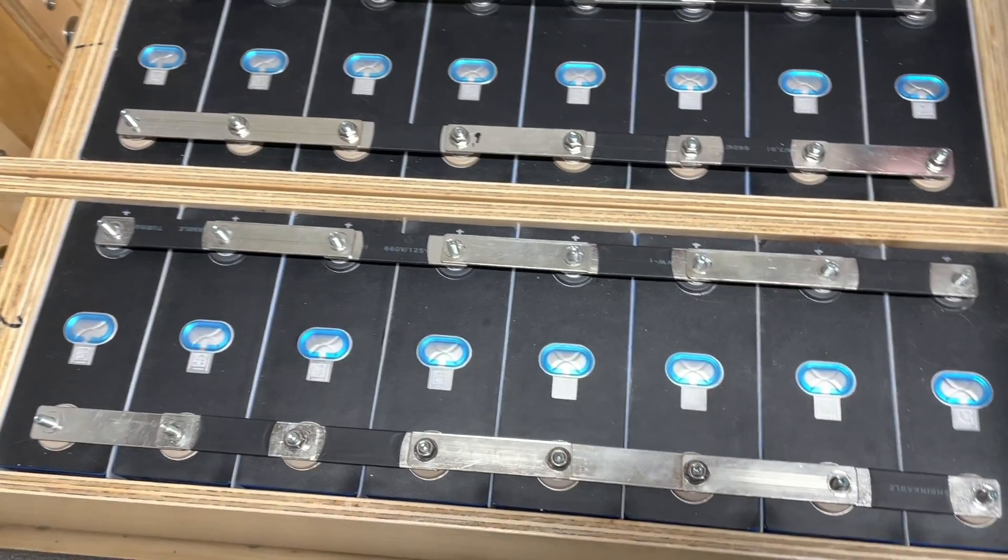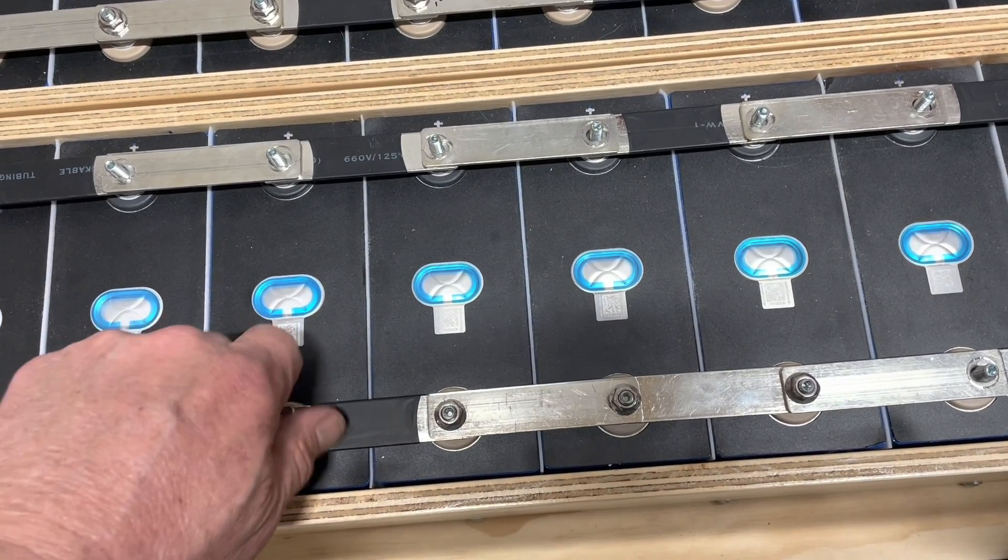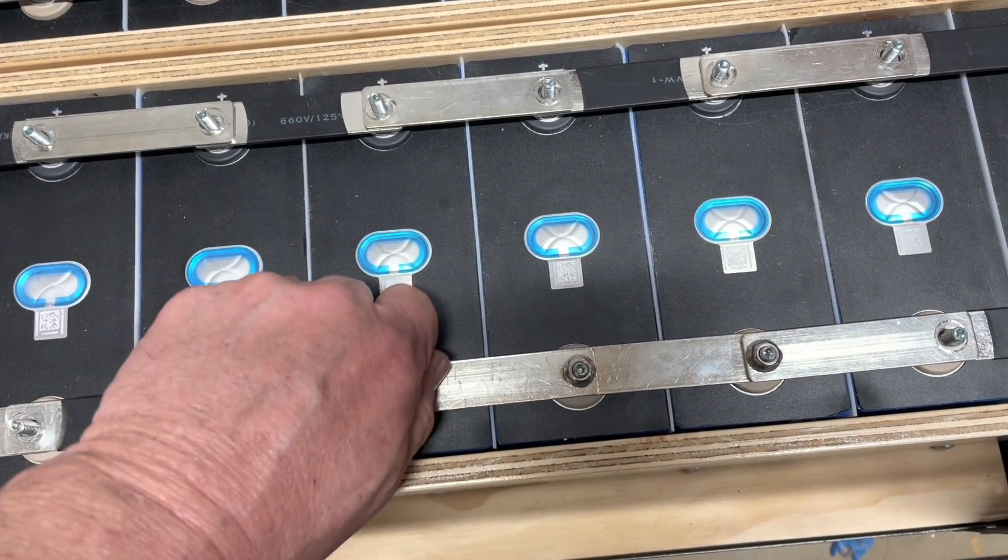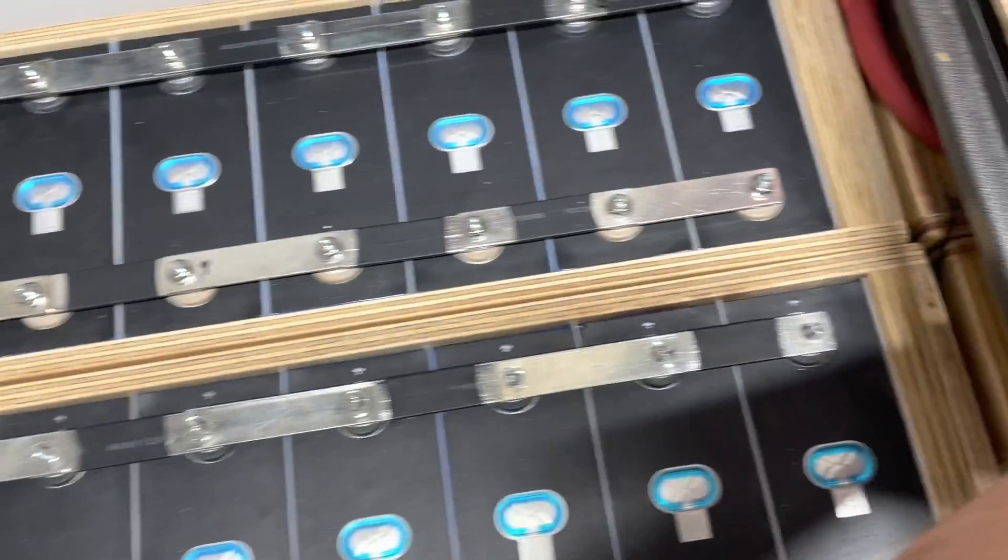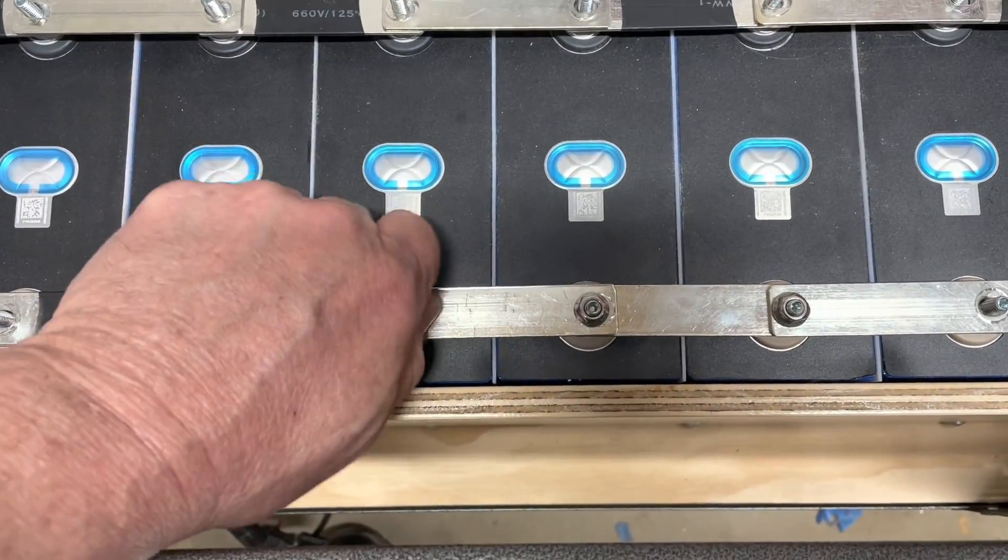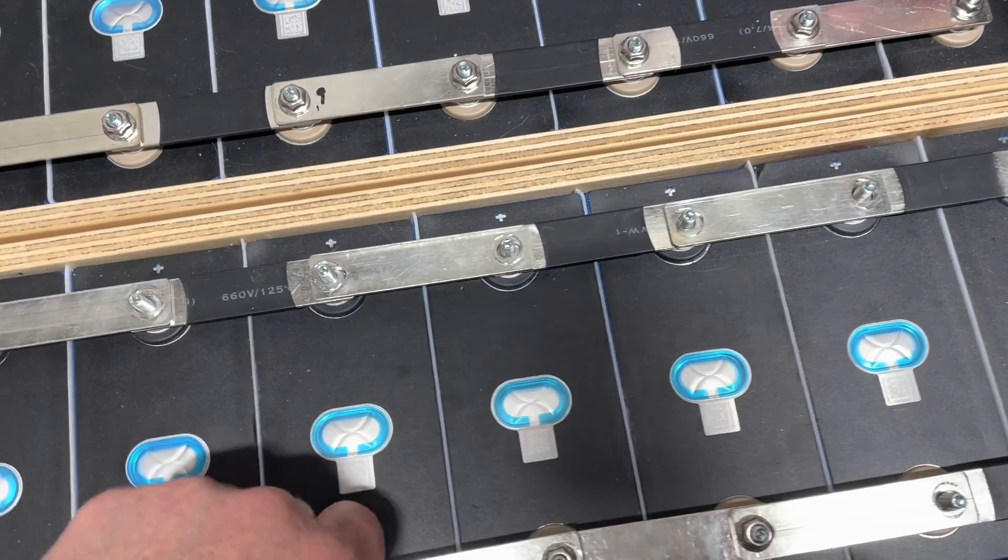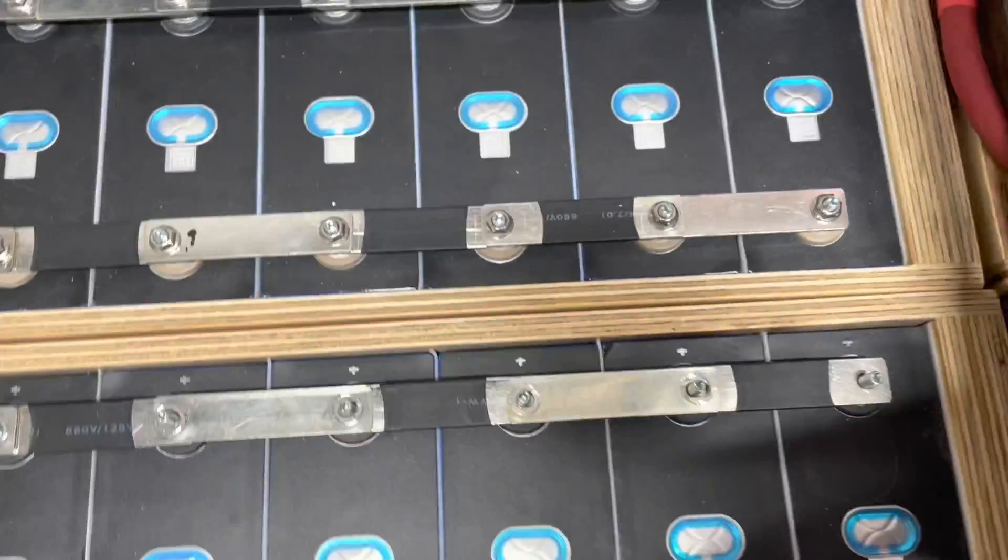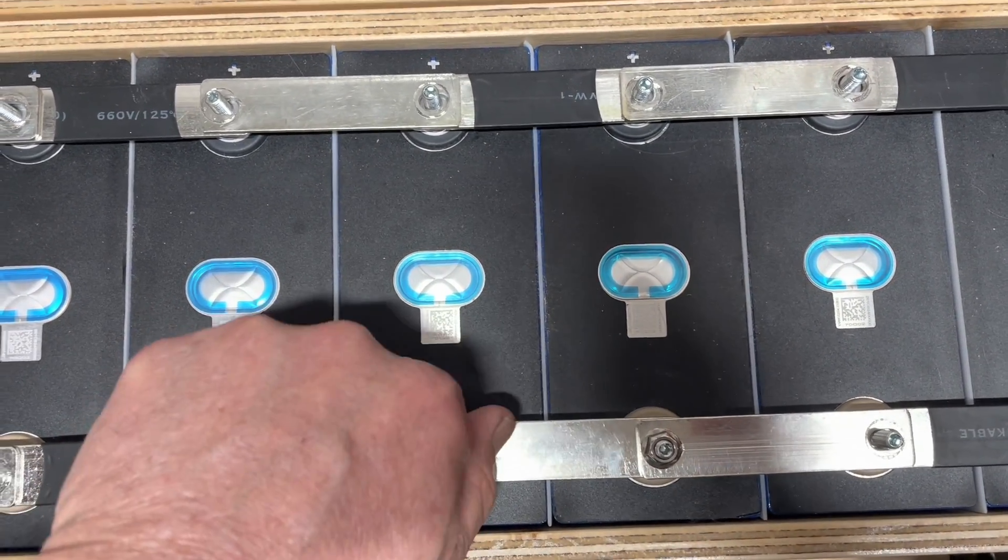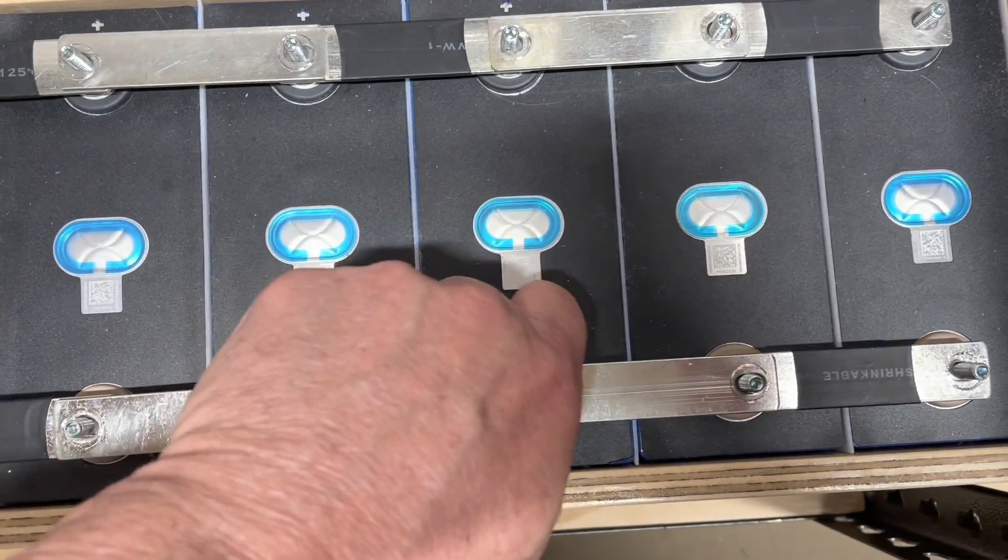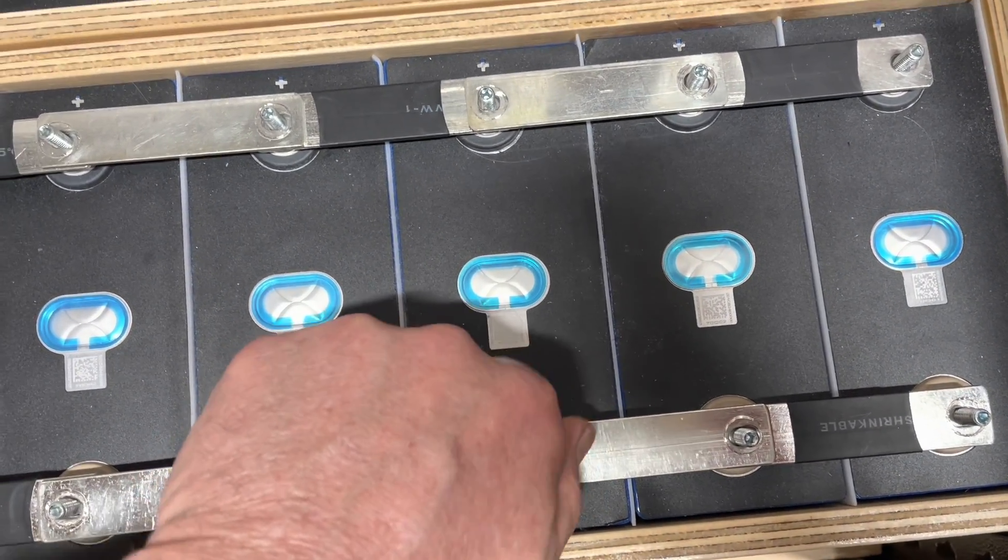Right now I'm in the process of removing the bus bars from all these terminals. What I'm going to do after that is lap these terminal tops because these bus bars may have actually dented or distorted the soft aluminum tops of these terminals, and I want them to be flat again. It also helps get rid of the oxidizer on the surface as well.